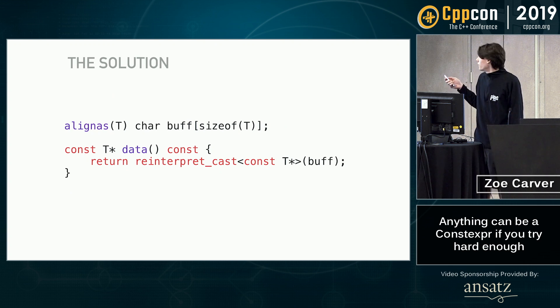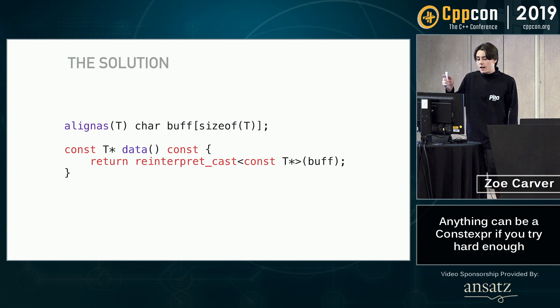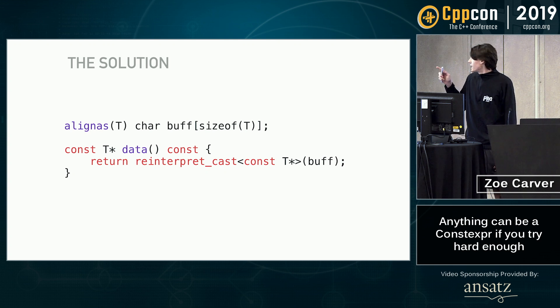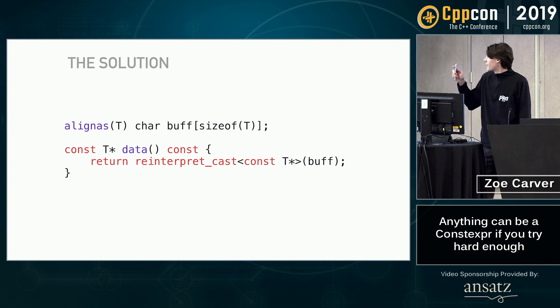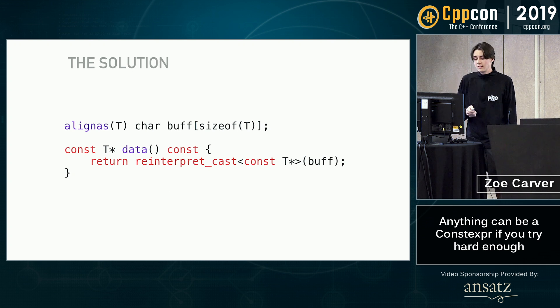This is actually a very simple solution. We just create a char buffer of size T, we align it as T, we reinterpret_cast it to T, and return it.